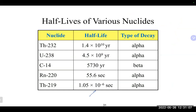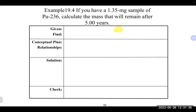Half-life is the time it takes for half of whatever you started with to decay. Some isotopes have very long half-lives, like uranium-238 at 4.5 × 10⁹ years, while others are very short, like radon-220 at about 55 seconds. The half-life of the isotope in the practice problem is 2.86 years, provided on the handout. Approach this the same way as a normal first-order kinetics problem.